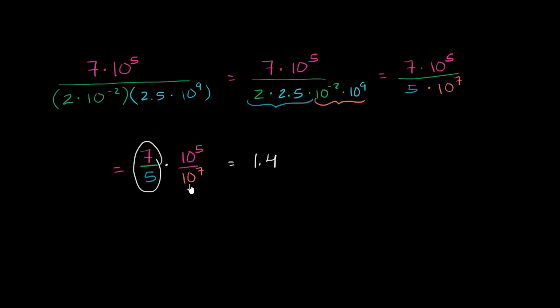And then 10 to the fifth divided by 10 to the seventh. So that's going to be the same thing as, and there's two ways to view this. You could view this as 10 to the fifth times 10 to the negative 7. You add the exponents, you get 10 to the negative 2.